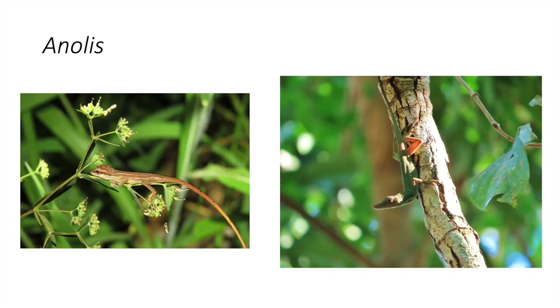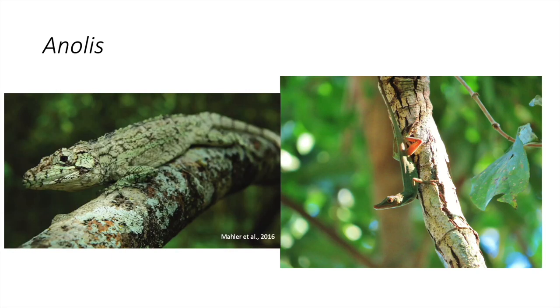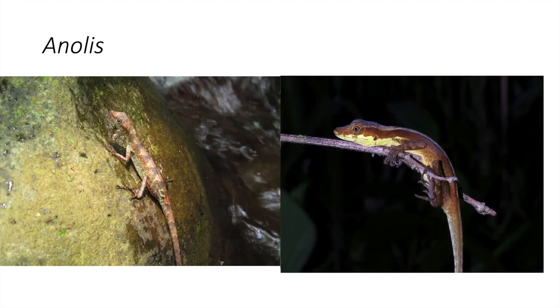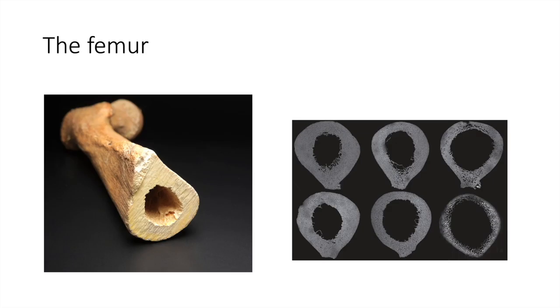I'm exploring this idea with Anolis, which is a very diverse group of lizards that have adapted to use very different micro habitats and, in consequence, have adapted their limb morphology accordingly. In particular, I will be talking about the femur of Anolis.